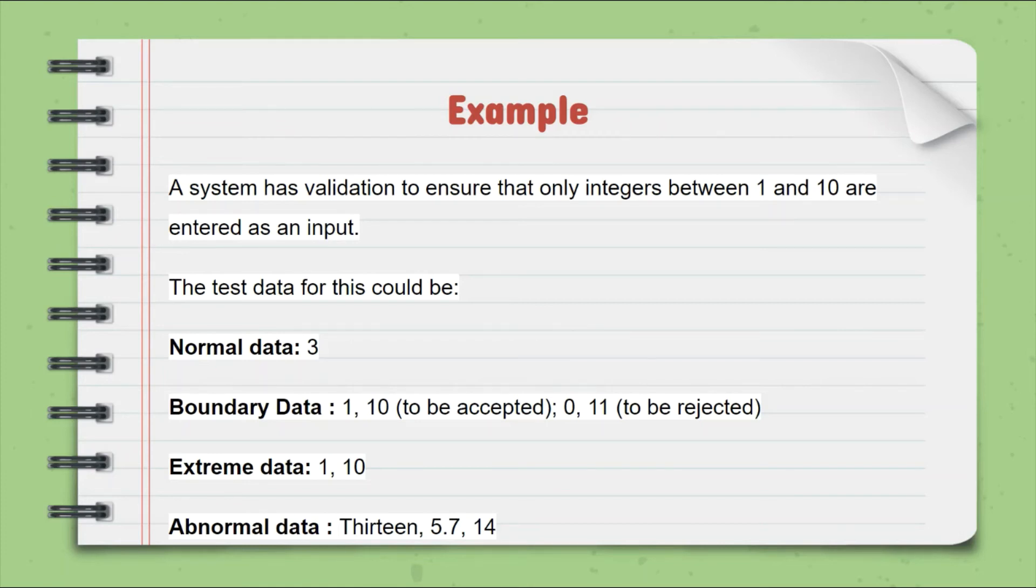Extreme data is the two upper limits and the lower limits. So 1 and 10 are the extreme data. Abnormal data is 5.7, 14, 100, 13 or inverse etc.